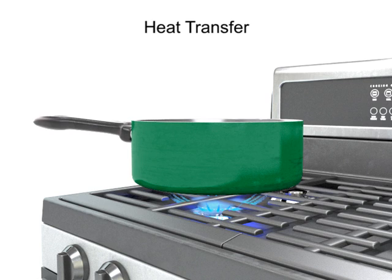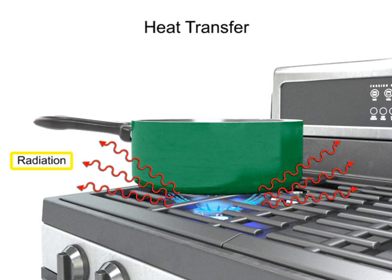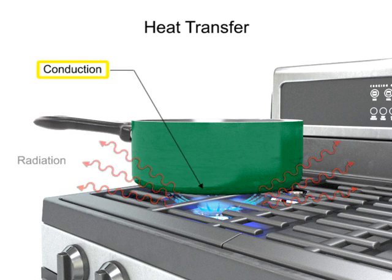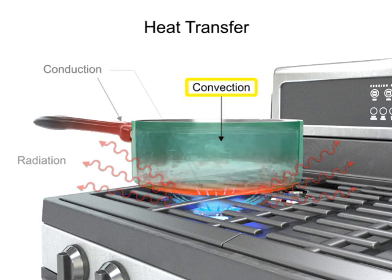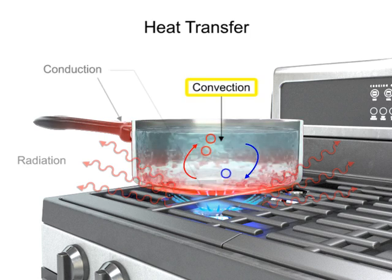Heat from the flame radiates in all directions. Conduction takes place with the transfer of heat from the burner to the metal pan. This heat transfer is also responsible for making the handle hot after a period of time. The water is heated by the process of convection, which is a circular movement caused by heated water rising and cooled water falling.